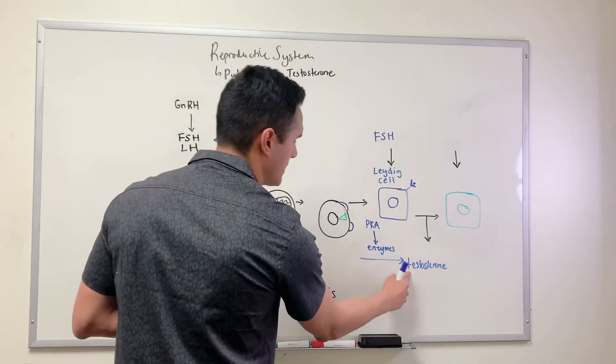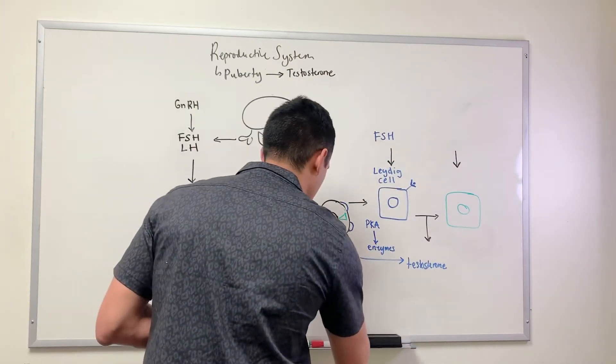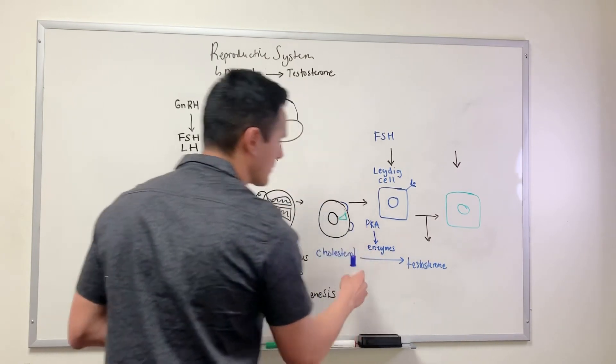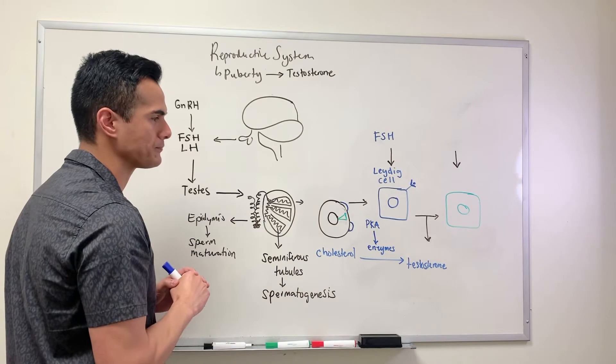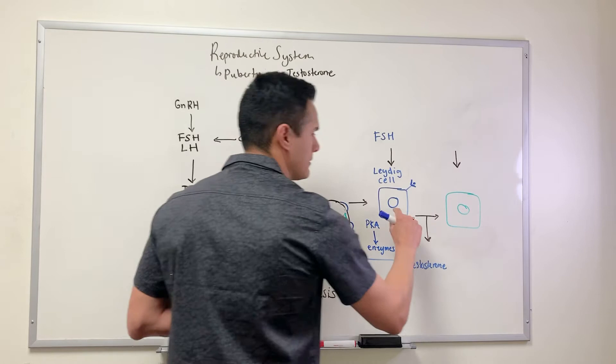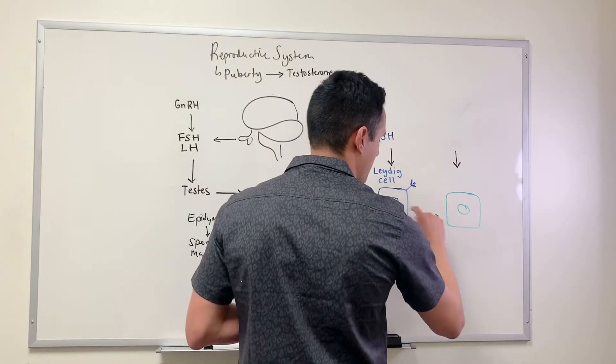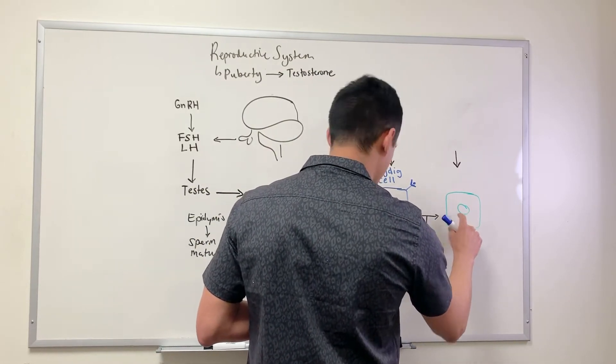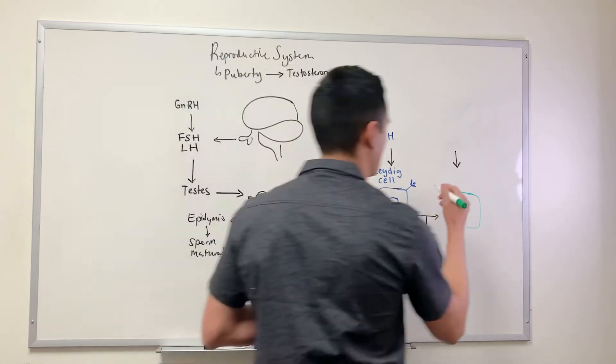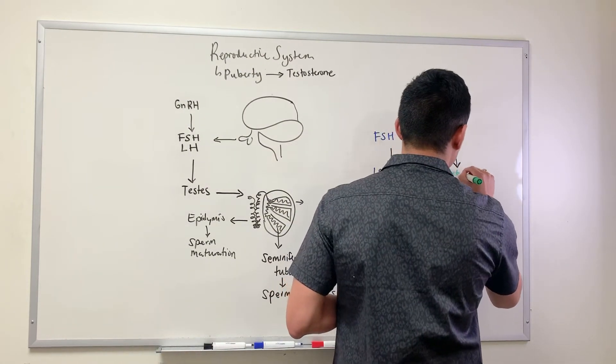We synthesize testosterone using cholesterol as our starting material. Once testosterone is synthesized, it diffuses across into this cell. This cell is known as the Sertoli cell.